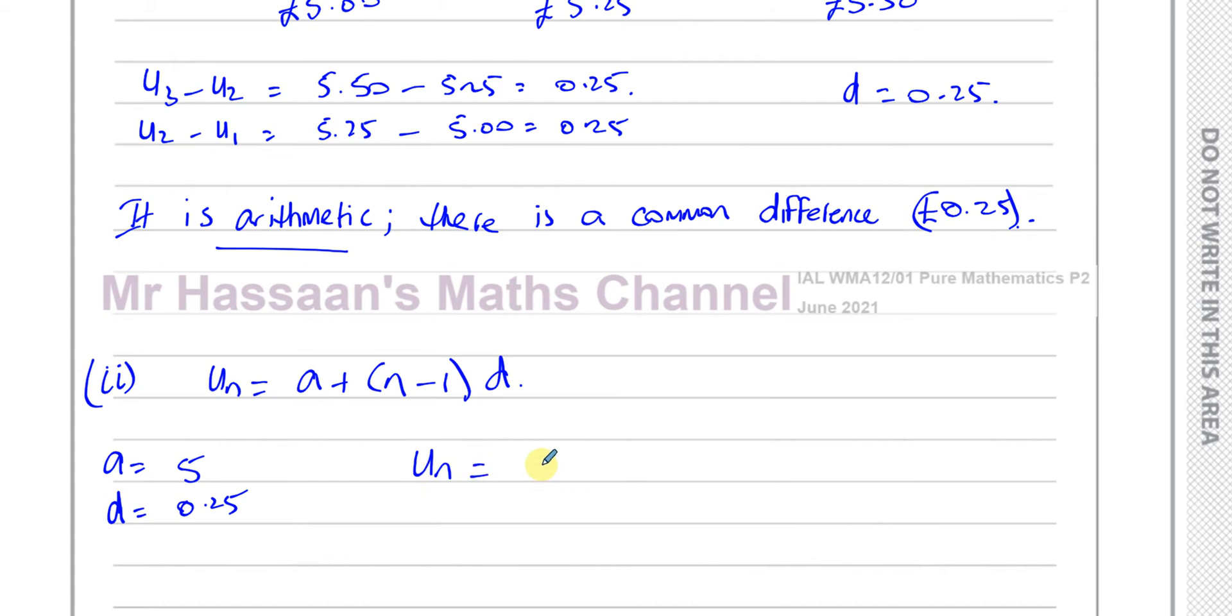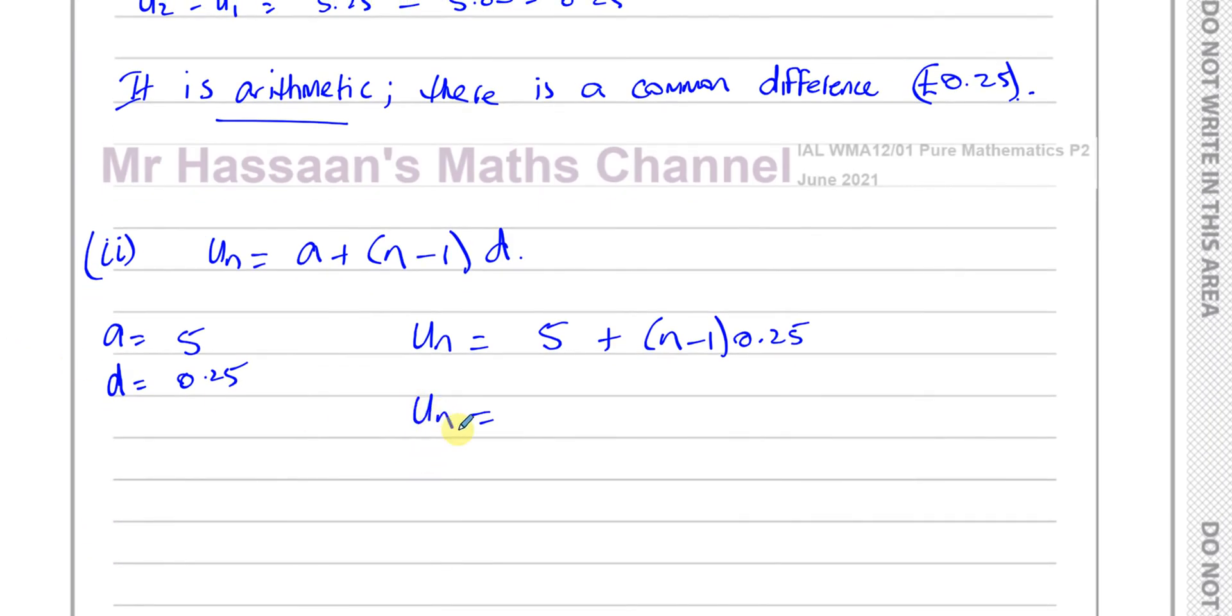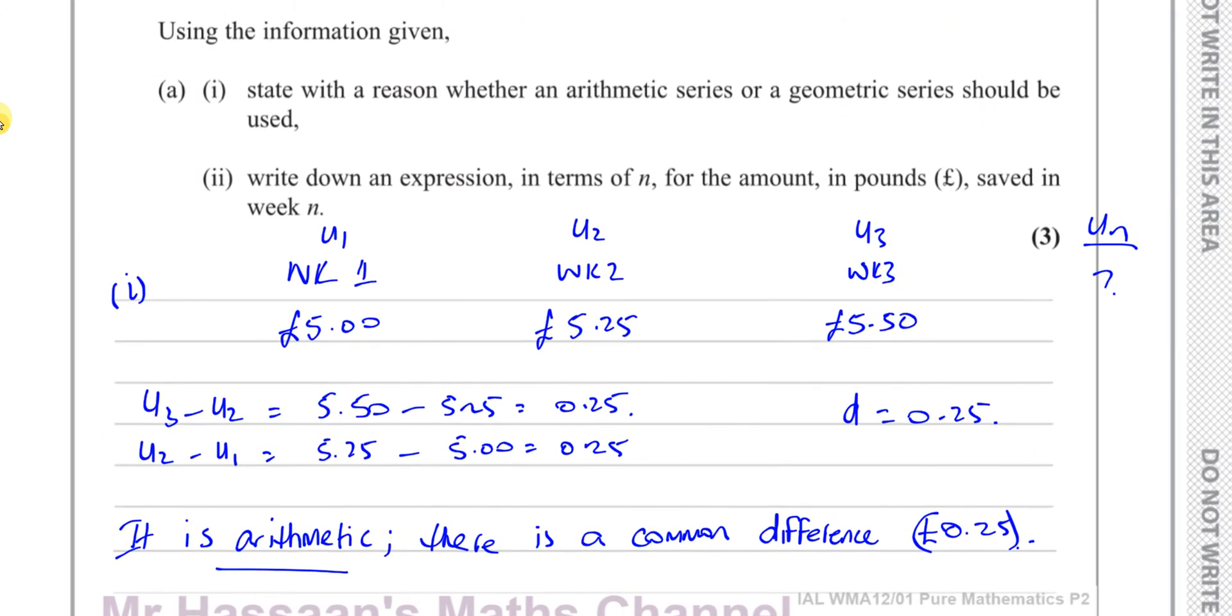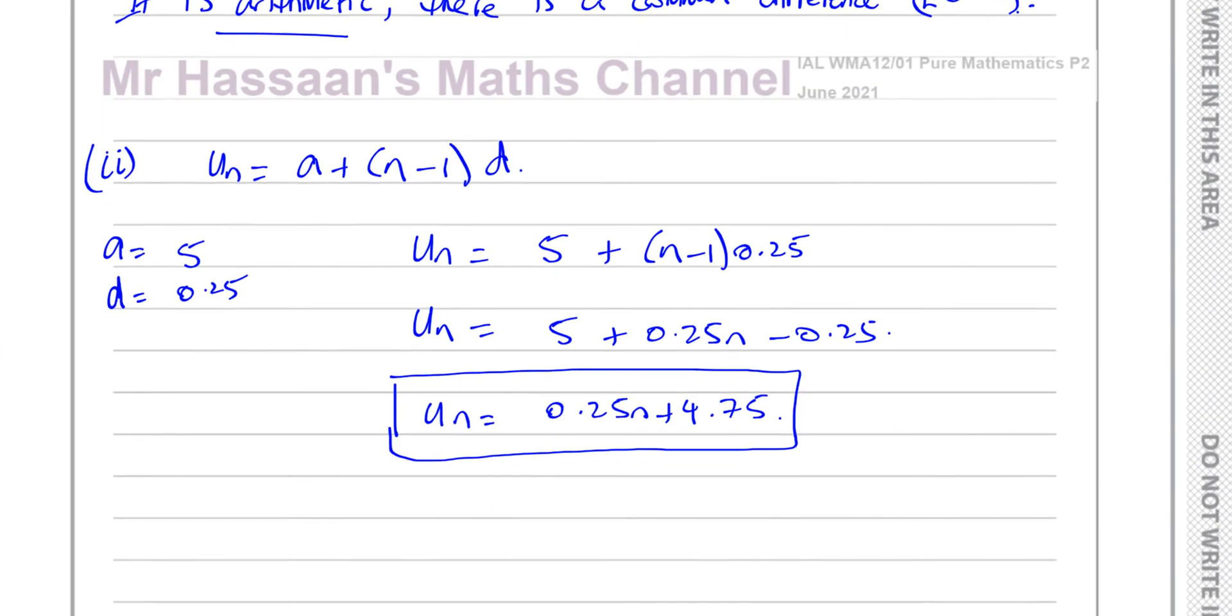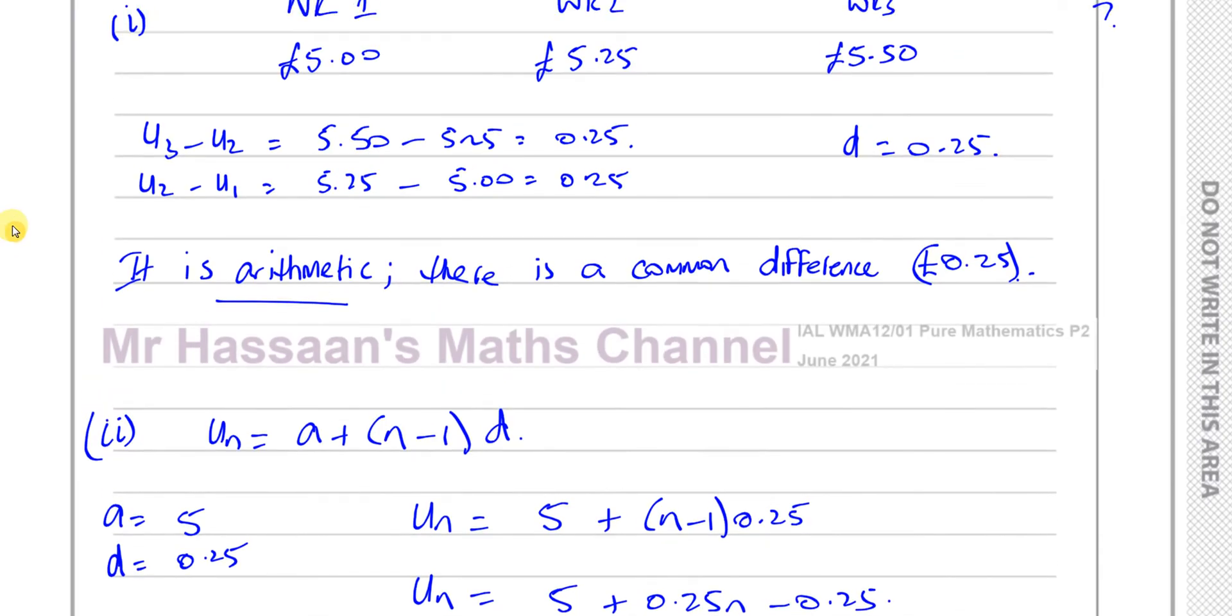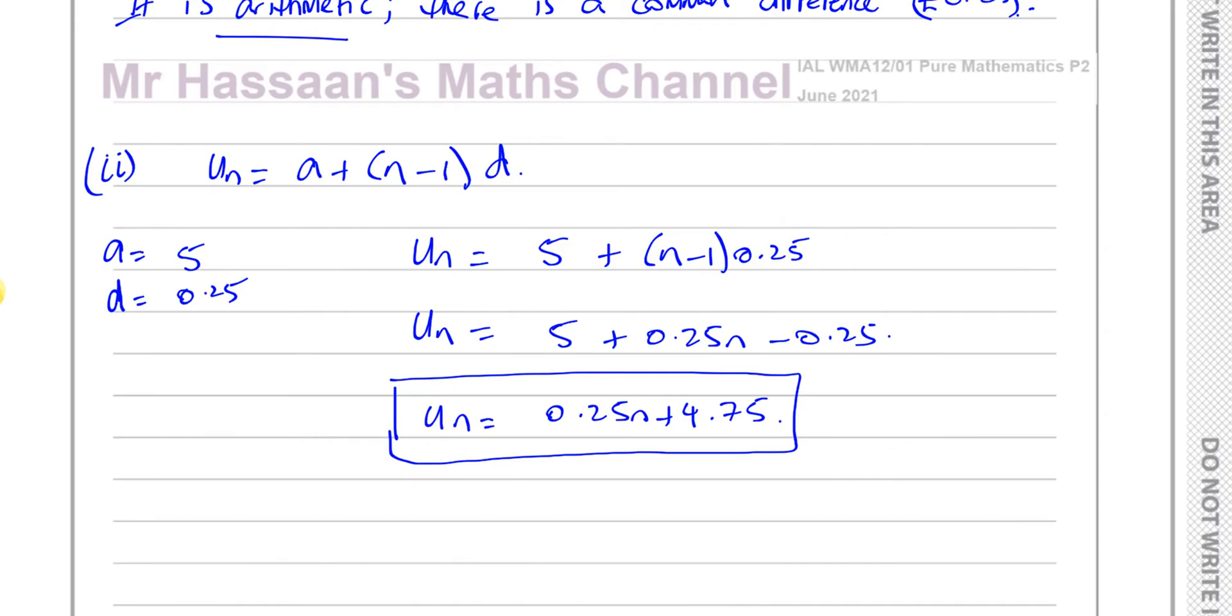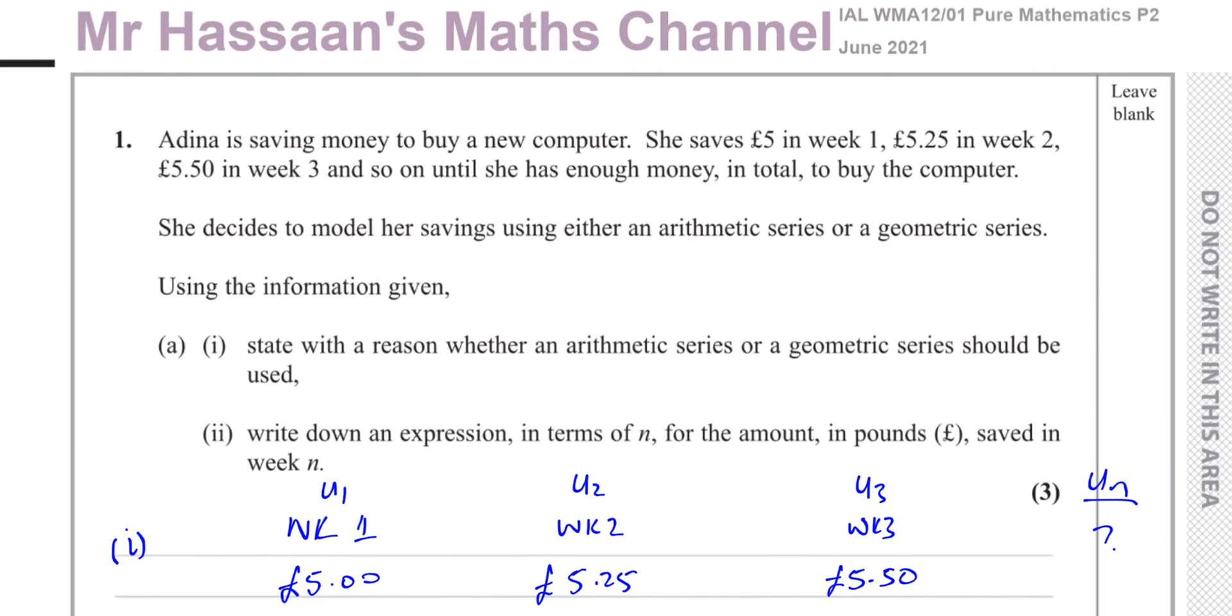So Un equals a, which is 5, plus n minus 1 times d, which is 0.25. We simplify this: 5 plus 0.25 times n minus 0.25. So Un equals 0.25n plus 4.75. That is the nth term of this arithmetic series. That's the expression in terms of n for the amount saved in week n. It's not asking us for the total amount saved up to week n, it's asking about the amount saved in that particular week n.